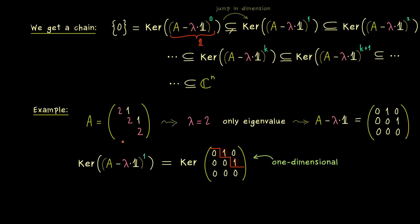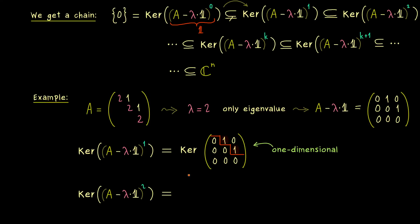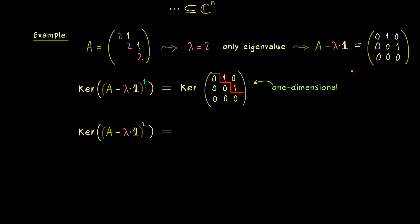And now it gets interesting, let's see if in the next step the dimension is increased or not. Hence now we have to do the matrix multiplication of this matrix with itself. And then we see what comes out are a lot of zeros and just one one. And we find it in the top right corner.